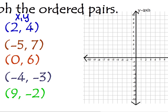My first ordered pair is 2, 4. So let's go over to the graph. I'm going to go 2 on my x, and then 4 on my y. 1, 2, 3, 4. And that's 2, 4.